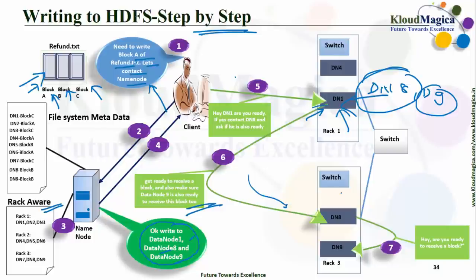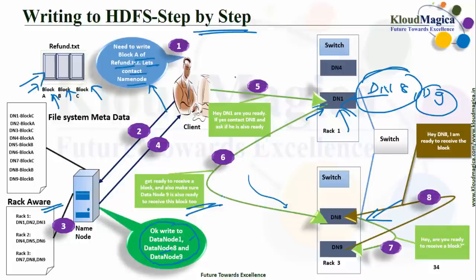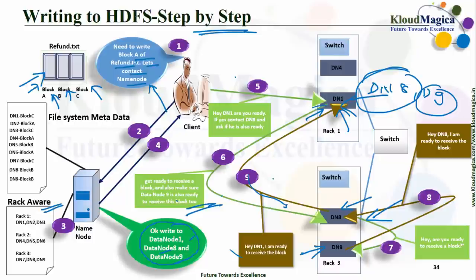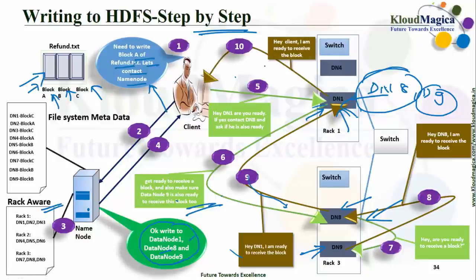Data node 8 asks data node 9 if it is ready to receive a block. Data node 9 replies back to data node 8 stating it is ready. Data node 8 replies back to data node 1 stating it is ready. Data node 1 then replies back to the client stating it is ready to receive the block. Now the client is ready to begin writing block data into the cluster.